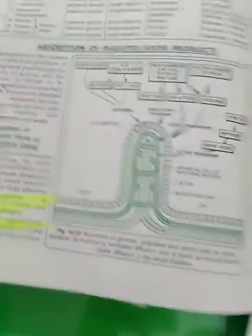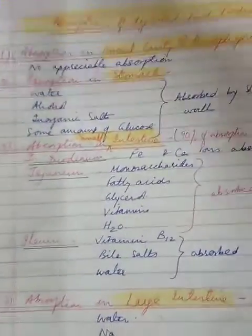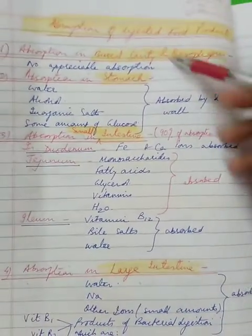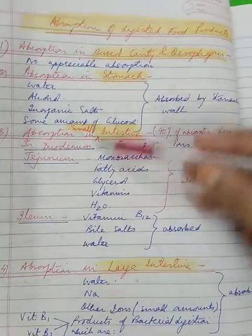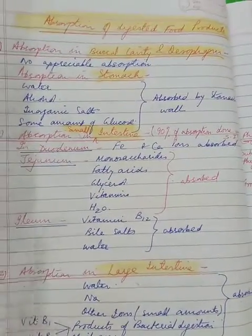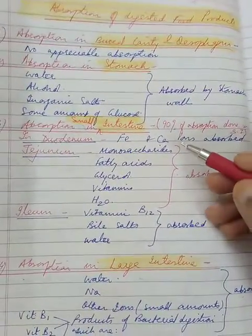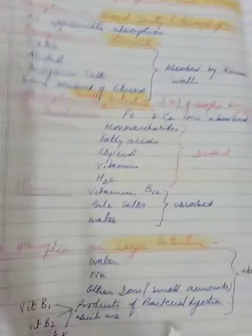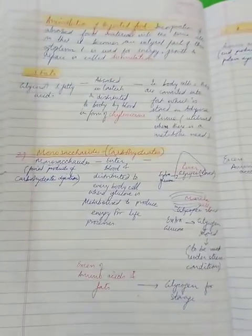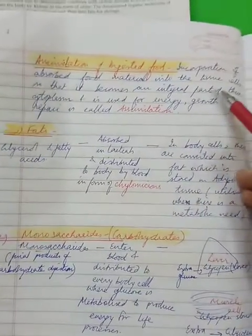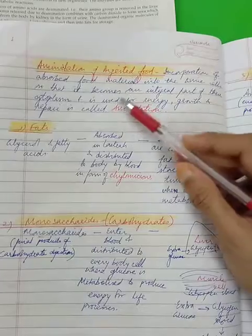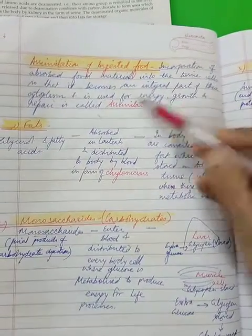Now what happens when the food is absorbed? The next process is assimilation. So what does the term assimilation mean? Assimilation means that the food that has been absorbed, now it is incorporated into the tissue cells so that finally it becomes the integral part of the cytoplasm. And it is used for purposes like energy, growth and repair. So how does the process of absorption take place? We will again talk in points. See here, three headings for assimilation.